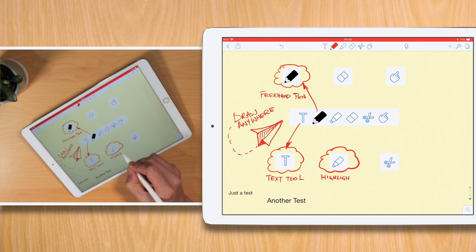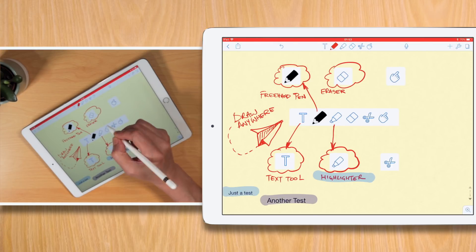Highlight specific text or items using the Highlighter tool. Erase anything using the Eraser tool.